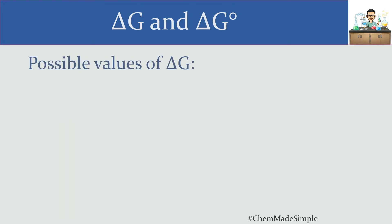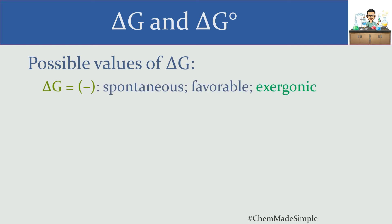Let's talk about some possible values of delta G. A negative delta G means the system is getting to a point of lower energy or higher stability, so we say the reaction is spontaneous — it's moving in a favorable direction on its own. The technical term for a negative delta G is exergonic. The prefix 'ex' indicates something is exiting, and what's exiting here is energy. So we call this an exergonic process.